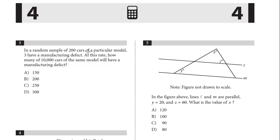In a random sample of 200 cars in a particular model, 3 have manufacturing defect. At this rate, how many of the 10,000 cars of the same model will have a defect? This is just a proportion question. We're told random sample of 200, there are 3. And so as long as you're consistent, we're going to put the number of defects on the top. I'll put a D.